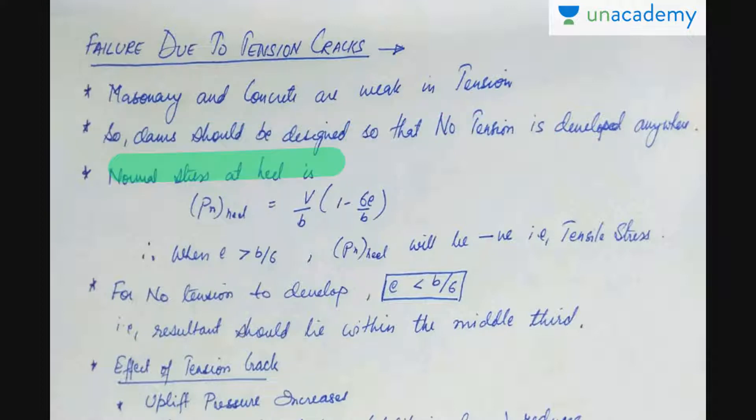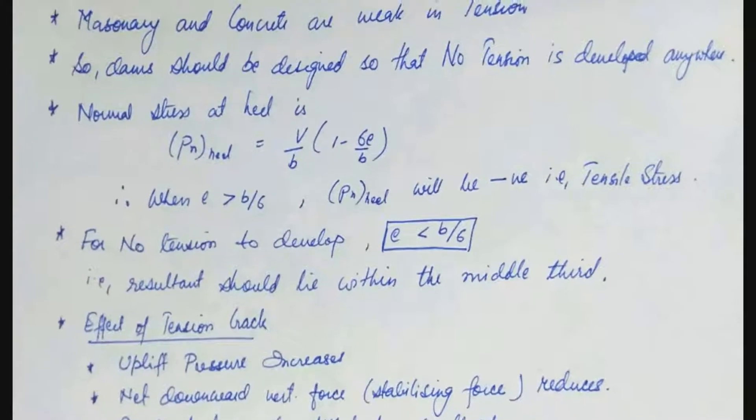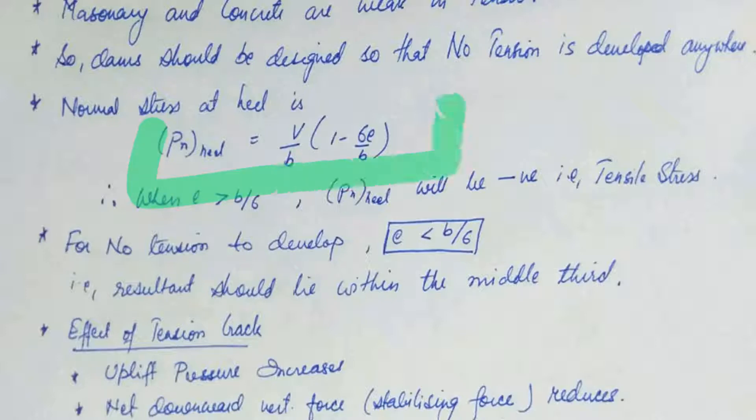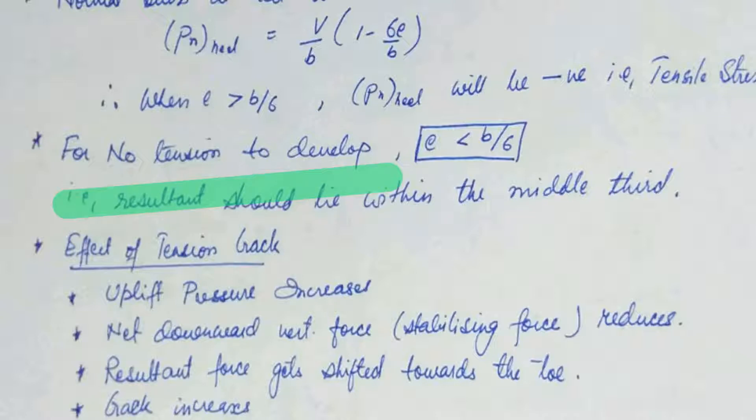Mecenary and concrete are weak in tension, so dam should be designed so that no tension is developed anywhere. Anyway, the normal stress at heel that we have just now found out is actually P at heel is equal to V by B multiplied by 1 minus 6 E upon B. Therefore, what we see here, when E is more than B by 6, the total normal stress at heel will be negative. That means tensile stress is there. For no tension to develop, E should be less than B by 6 that is resultant should lie within the middle third.